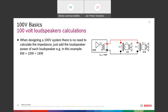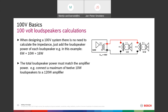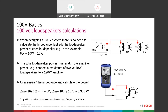When designing a 100V system there is actually no need for those complicated calculations. You can simply calculate the total power of all connected loudspeakers by adding them up. A 6W plus a 10W loudspeaker gives a total load of 16W on the amplifier — easy. For a 120W amplifier you could connect up to twelve 10W loudspeakers. You can also measure it with a handheld impedance measurement device connected to the loudspeaker line to read the total impedance directly.